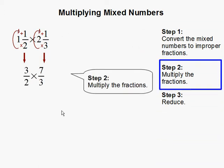Step 2. Multiply the fractions. So now we simply multiply our fraction. 3 times 7 is 21, and 2 times 3 is 6. You can also reduce before you multiply as well. In this case, we're just simply multiplying it across and reducing later.